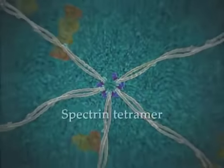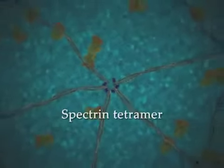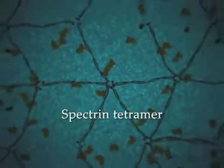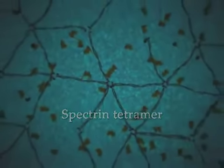Beneath the lipid bilayer, spectrin tetramers arranged into a hexagonal network are anchored by membrane proteins. This network forms the membrane skeleton that contributes to membrane stability and membrane protein distribution.